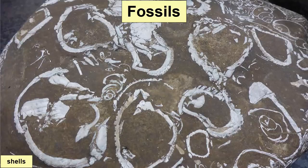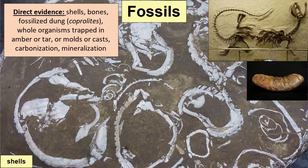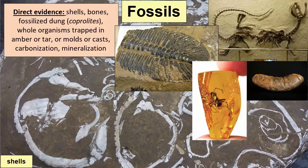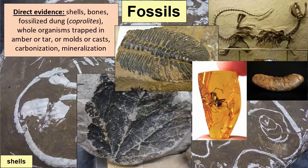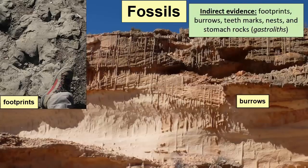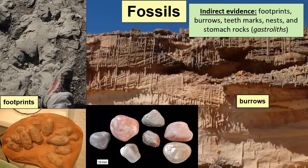Fossils are direct or indirect evidence that a particular organism lived in an area at the time the rock was formed. Direct evidence includes shells, bones, fossilized dung known as coprolites, whole organisms trapped in amber or tar, molds or casts of the organism, carbon films left by leaves, and original buried shells replaced by minerals. Indirect fossil evidence includes footprints, burrows, teeth marks, nests, and stomach rocks known as gastroliths — evidence that an organism was in the area, but telling us very little about its structural shape.